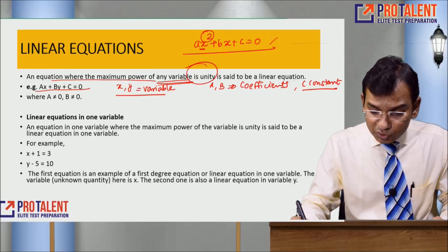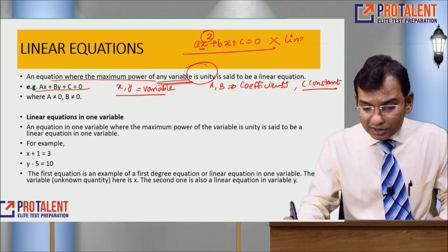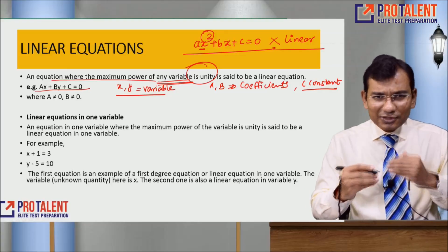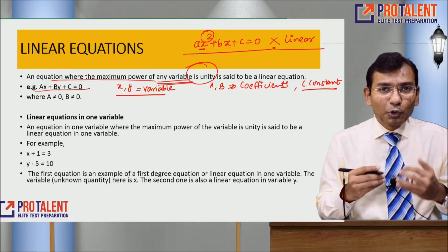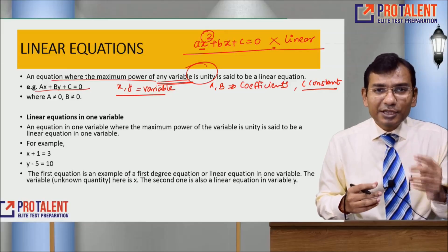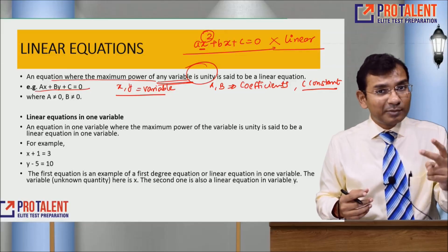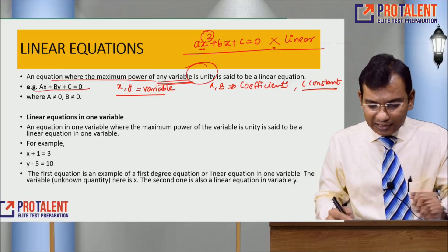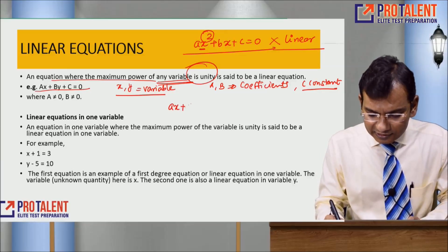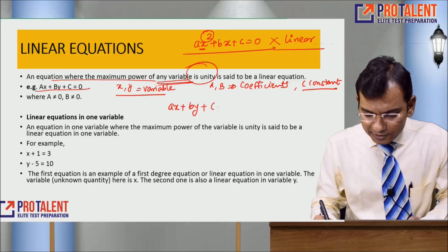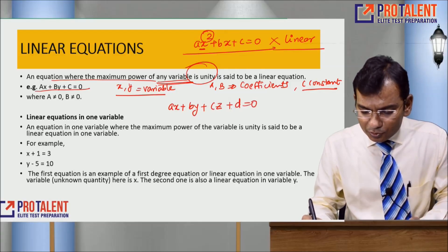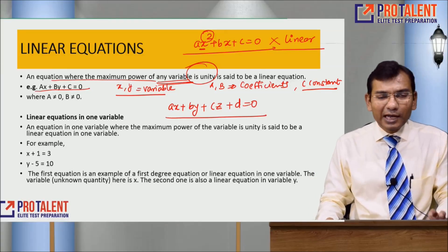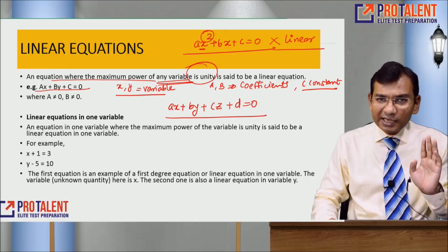Some examples are not linear equations because the power of the variable exceeds one. Linear equations can be of different types. You can have a linear equation in one variable. For exams, two variables is very common. Linear equation in three variables like ax plus by plus cz plus d equals zero is also possible. You should prepare for two and three variable equations.